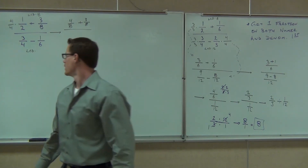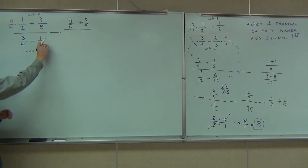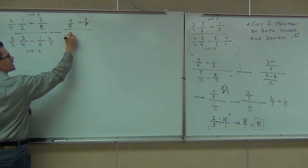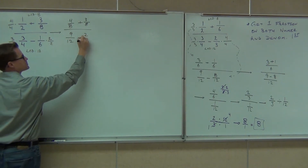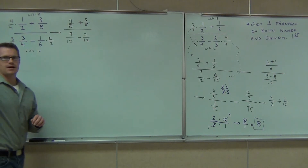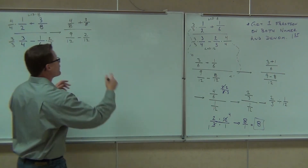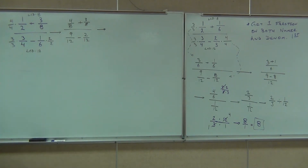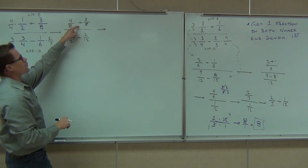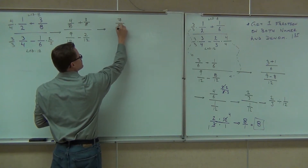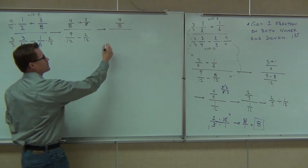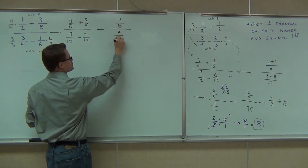6 doesn't work, so the next multiple is 12 — that clearly works. This fraction will multiply by 2 over 2, this one will multiply by 3 over 3, and we're going to get 9 twelfths minus 2 twelfths. Our 4 plus 3 over 8 gives us 7 eighths. Our 9 minus 2 over 12 gives us 7 twelfths.